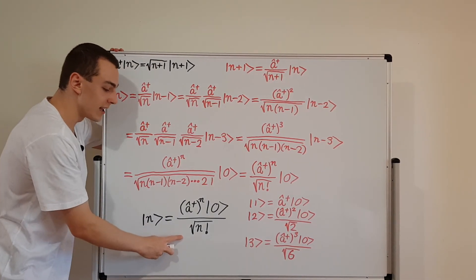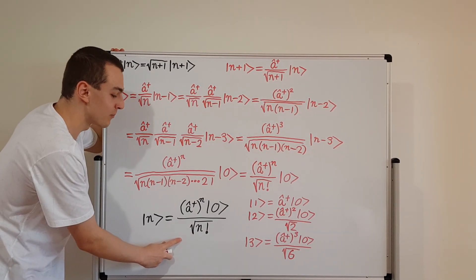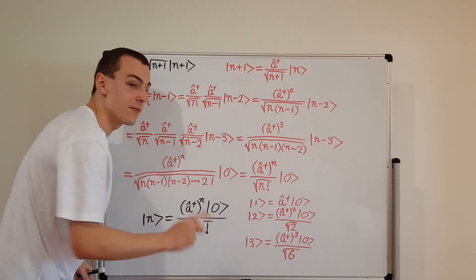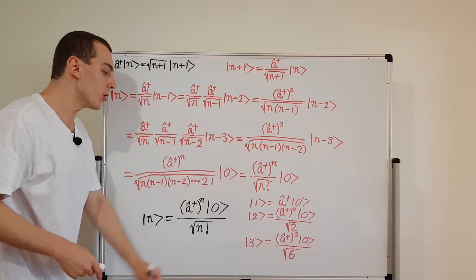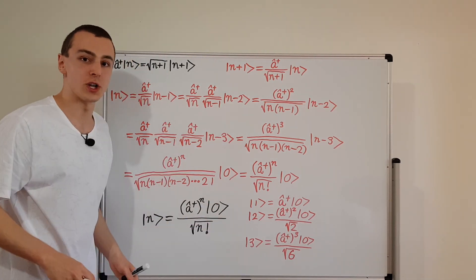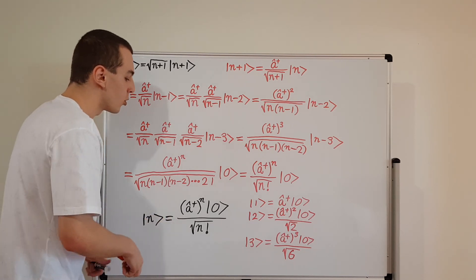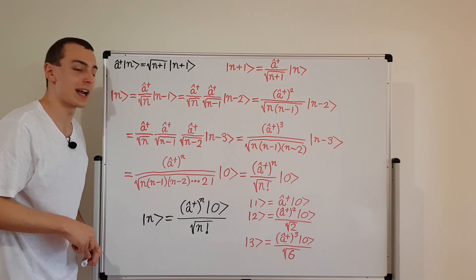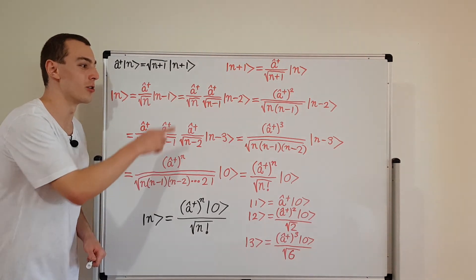We're going to be using this general relationship in later videos in the quantum mechanics playlist. If we know the ground state wave function, then we can find every other wave function — all of the excited states can be found from the ground state wave function. That is why this general relationship is very important.